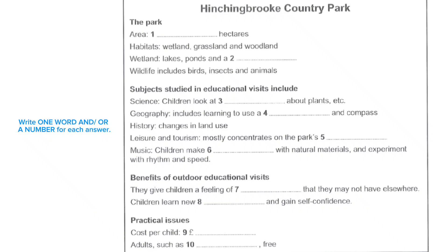If there are over 30, it costs £4.95 for each child who attends on the day. We invoice you afterwards, so you don't pay for children who can't come because of sickness, for example. There's no charge for leaders and other adults — as many as you want to bring.